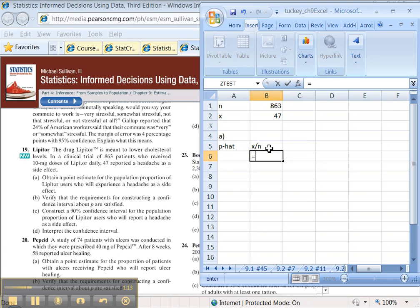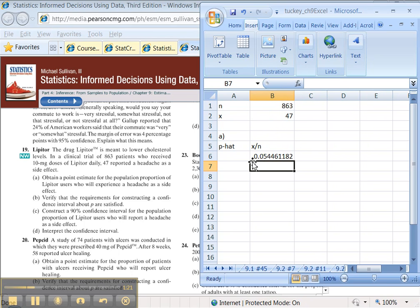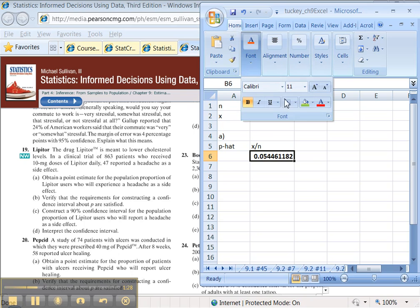Now, what would that be in our case? That would be equal to x, which is 47, divided by n, which was 863. All right, there's p-hat. That's done. I know it looks like fat, but it's not. Statisticians aren't nearly cool enough to have that kind of code name.